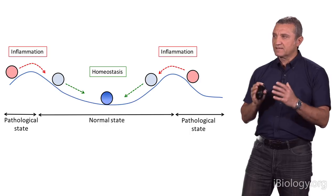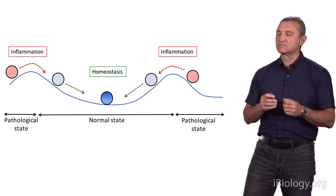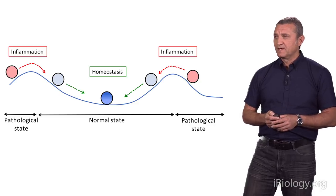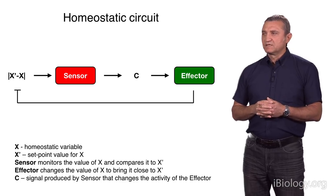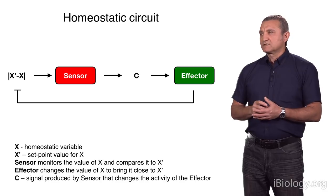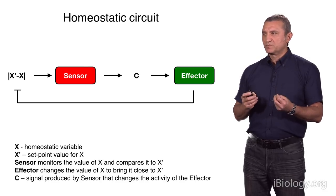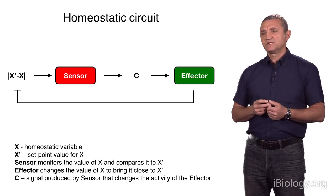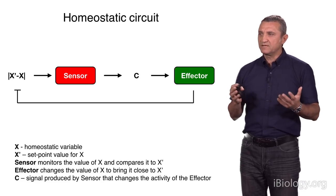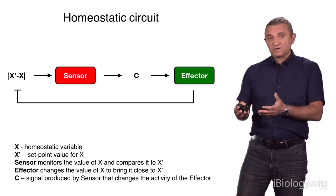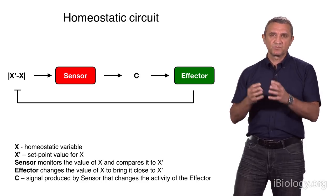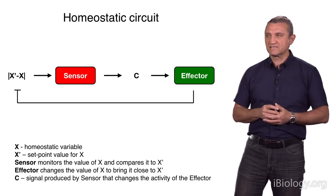In modern terms, we can describe homeostasis using the idea of a control circuit — a very simple but fundamental concept. Key components of the homeostatic circuit: whenever we speak about homeostasis, we talk about maintenance of some variable of the system — it could be blood sugar, temperature, sodium, or any variable the system cares about and wants to maintain. That's denoted as X. When we refer to homeostasis of this variable, we want to keep it close to some desired value, the set point value X prime. The difference of the variable's value from the set point value is what's monitored by the sensor.